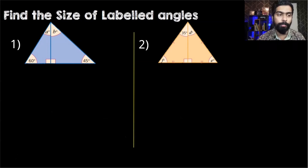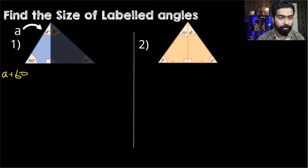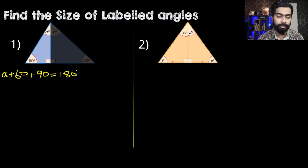Let's form an equation first. To find angle A, we see that angle A plus 60 degrees plus this right angle which is 90 degrees all add up to 180 degrees — three angles add up to 180 degrees.